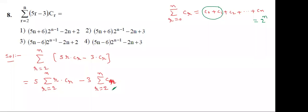For the first part: sigma from r=0 to n of r·Cr — expanding: 0·C0 cancels, then 1·C1 + 2·C2 + 3·C3 + ... + n·Cn. This starts from C1 onwards; C0 goes to 0 completely, meaning one-time differentiation. The answer is n·2^(n-1).